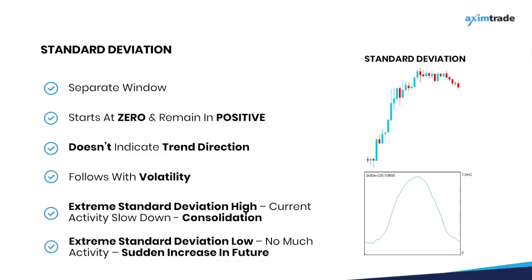Similarly, a decrease in the standard deviation line reflects low volatility in the market, indicating that prices are stable and there is not much movement. Extreme standard deviation lows indicate that current activity is low and there will be a sudden increase in activity in the future. We'll go through the standard deviation trading technique in detail on chart and also how to use it in combination with price action.